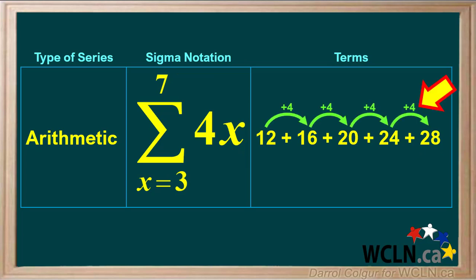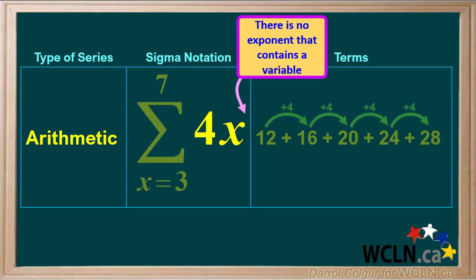We see that this is indeed an arithmetic series, and the common difference is positive 4. In this case, no exponent is shown for x, so we can assume the exponent of x is just 1. There is no exponent that contains a variable — this is true for the function in all arithmetic series.